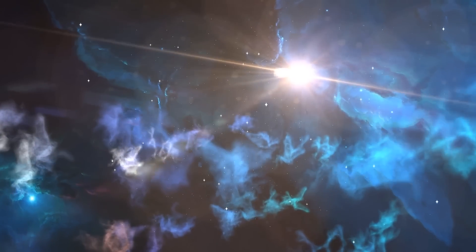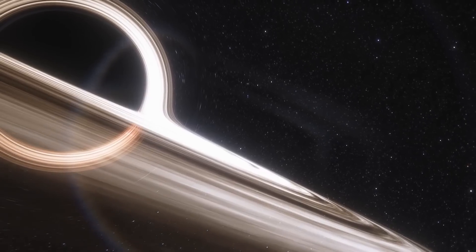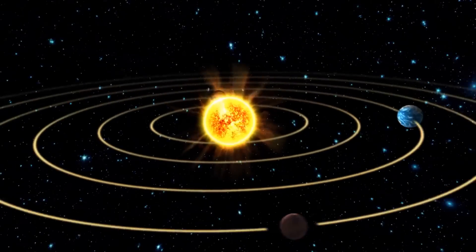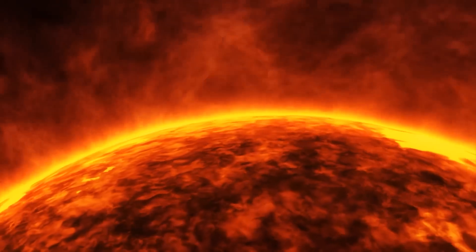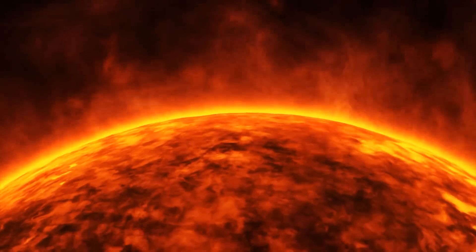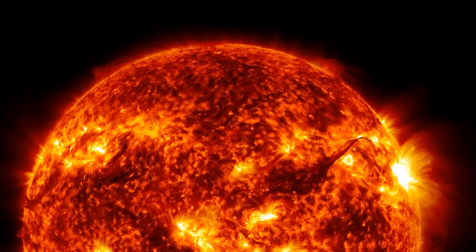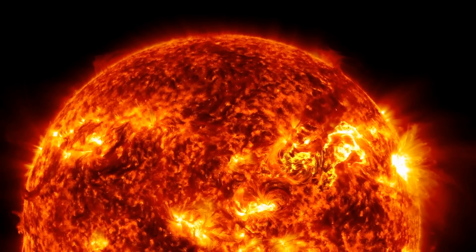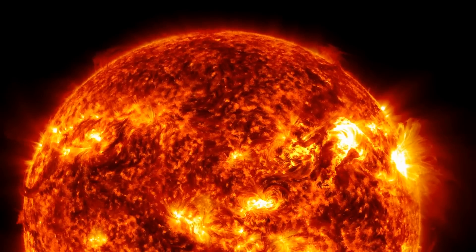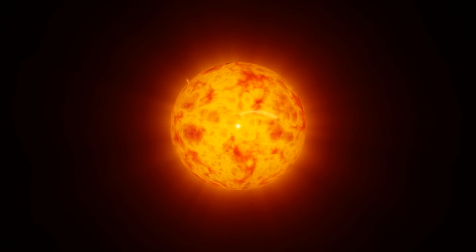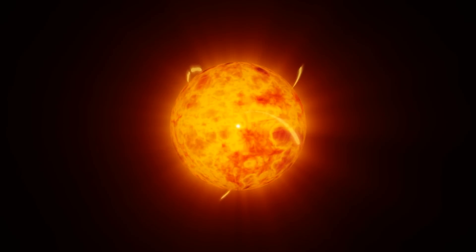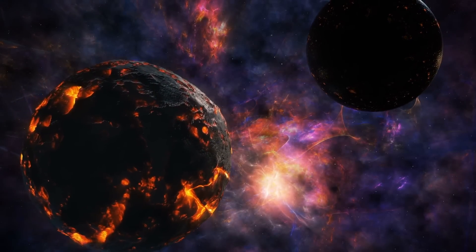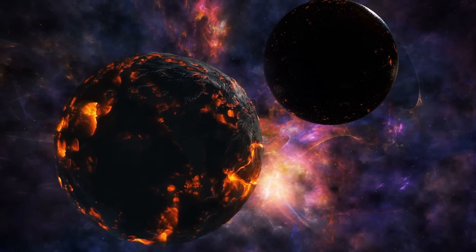The lifespan of a star like Betelgeuse is significantly shorter than that of smaller stars like our Sun, mainly due to its massive size and rapid consumption of nuclear fuel. In the red supergiant phase, Betelgeuse continues nuclear fusion in its core, now converting heavier elements like carbon and oxygen. Each fusion phase is shorter than the previous one, culminating in the final stages where iron forms in the core. Iron fusion does not generate energy, leading to the ultimate gravitational collapse of the star.